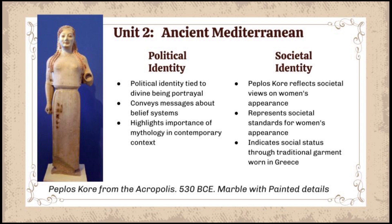Next up we have unit two, the ancient Mediterranean, and we chose the Peplos Kore. For political identity, this piece is a divine entity which can convey messages about certain belief systems and the importance of mythology at the time. Furthermore, in the aspect of societal identity, the Peplos Kore from ancient Greece reflects how society views a woman and how a woman should look. Due to her traditional garment worn by women in Greece, it also shows social status as clothing was an important marker of identity in ancient society.